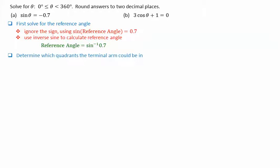We then determine which quadrants the terminal arm could be in. This is based on the sign of the trigonometric function.